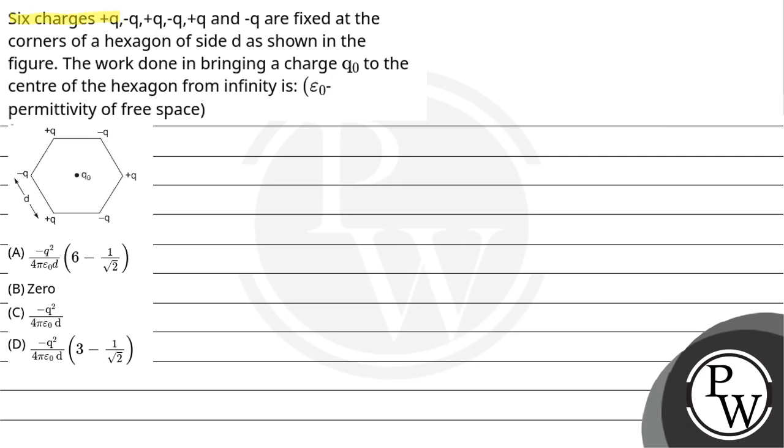Let's read the question. Six charges +Q, -Q, +Q, -Q, +Q, and -Q are fixed at the corners of a hexagon of side D as shown in the figure. The work done in bringing a charge Q₀ to the center of the hexagon from infinity is - epsilon naught is the permittivity in free space.